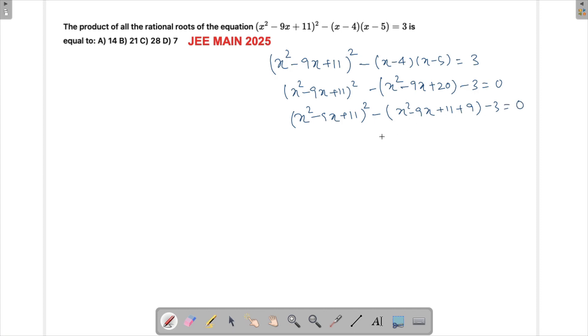Now we can look at substituting x² - 9x + 11 as something like y. So we'll assume this to be this and then try looking at what this will become. So this will become y², this will become y + 9 - 3 = 0, which is looking like a much simpler quadratic to solve now. So y² - y - 12 = 0.